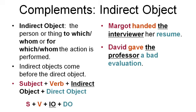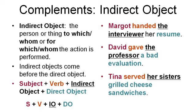Therefore, the professor is the indirect object. Tina served her sisters grilled cheese sandwiches. Tina is the subject. Served is the verb. What did Tina serve? Grilled cheese sandwiches. Who did she give those sandwiches to? Her sisters. Her sisters is the indirect object, which answers the question: to whom?